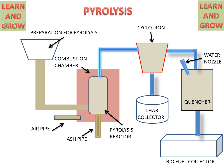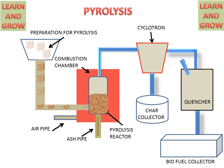Now let's see the working of the pyrolysis process. Wooden or small biomass particles are prepared by drying and cutting operations. These small pieces reach the pyrolysis reactor, which works in the absence of oxygen. The combustion chamber indirectly heats the pyrolysis reactor.